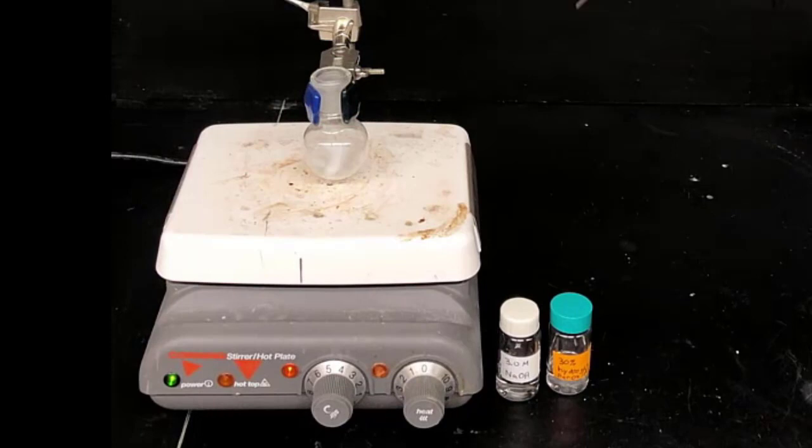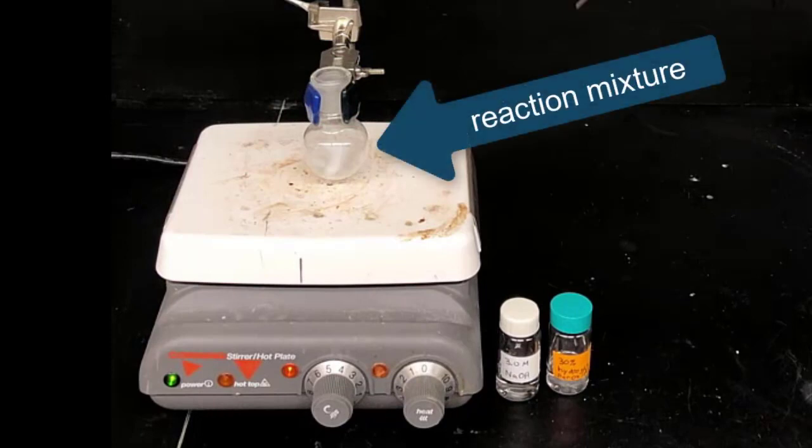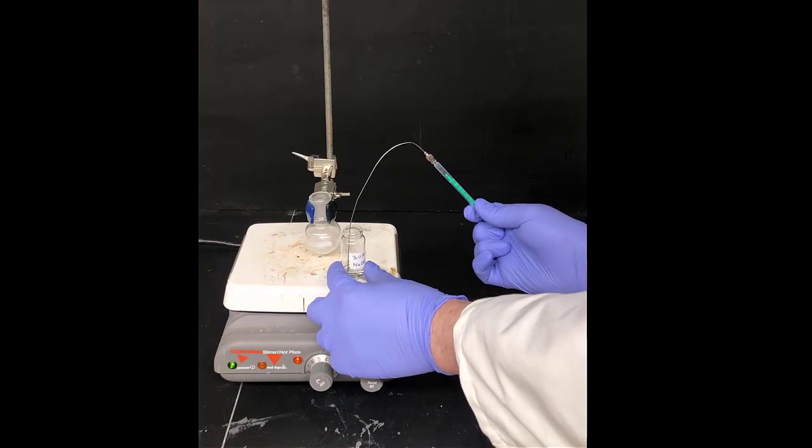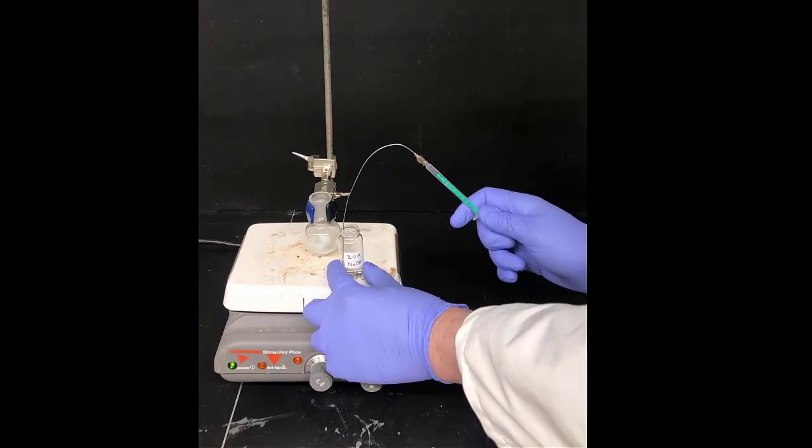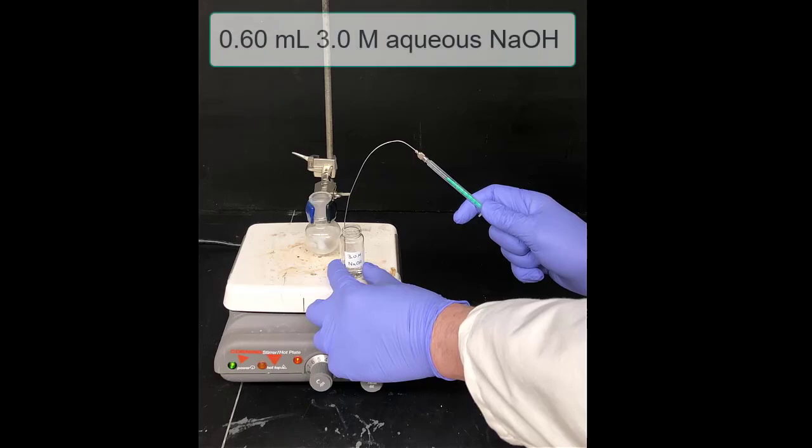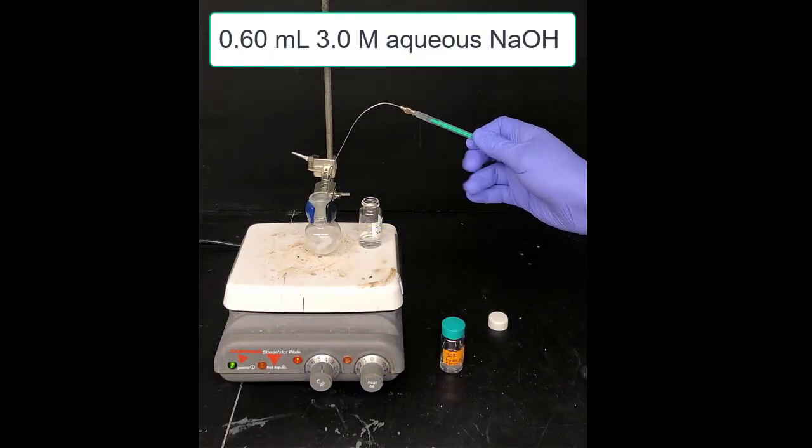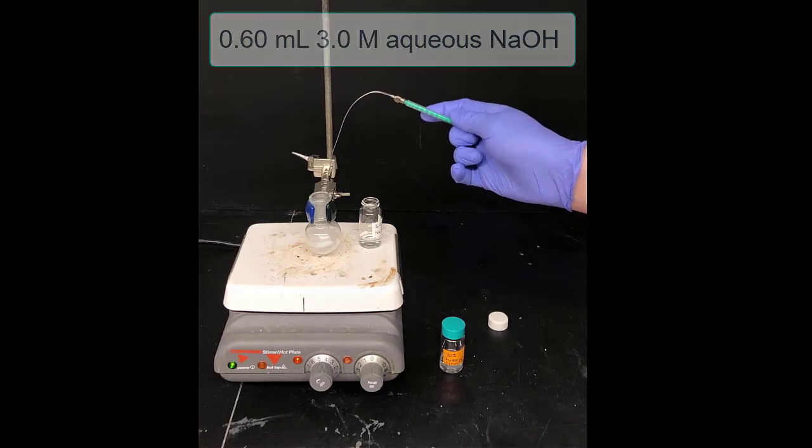Your reaction mixture from last week contains THF and the product mixture in a round bottom flask. You should put a stir bar in your round bottom flask, put that on a stir plate, and get that stirring. Then, we'll dispense the sodium hydroxide reagent using a one milliliter syringe and stainless steel needle. Withdraw 0.60 milliliters of this reagent and then inject that into the reaction mixture with stirring.